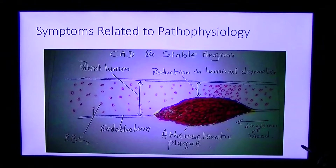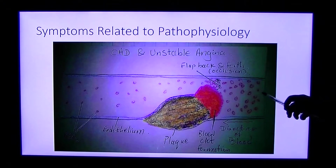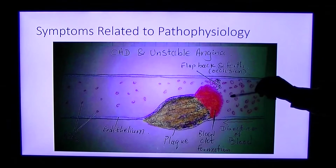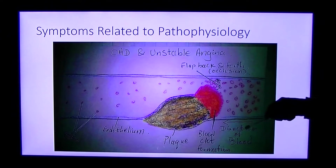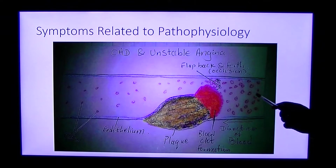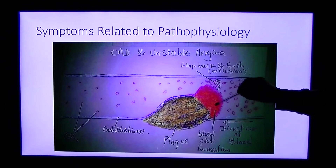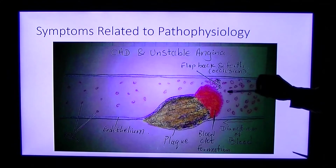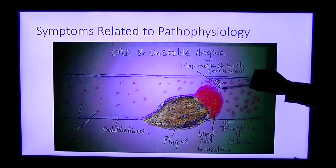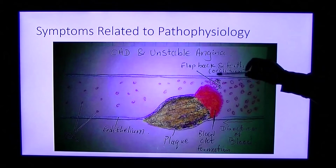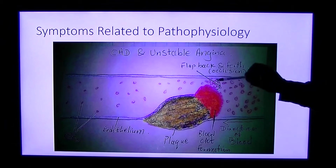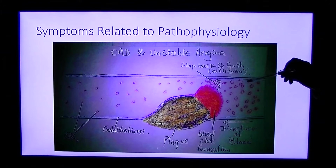If proper treatment is not provided, the problem can get more complicated and the person can develop acute coronary syndrome. In unstable angina, the plaque can rupture under certain circumstances, such as high blood pressure. This exposed plaque material, which is very thrombogenic in nature, will form a blood clot. Part of the plaque wall can rupture and flap back and forth, and whenever it does, it can completely occlude the vessel. At that instant, the person can get angina even at rest.